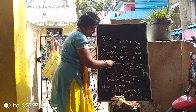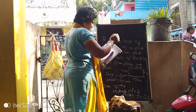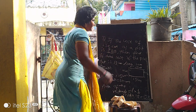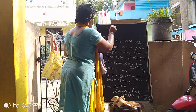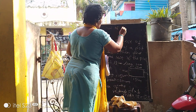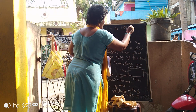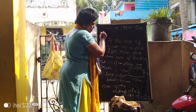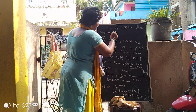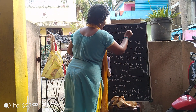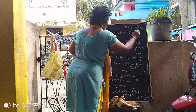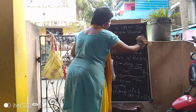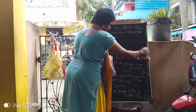Cost of 1 square centimeter is equal to Rs. 800. So cost of 150 square centimeters is equal to 800 into 150.